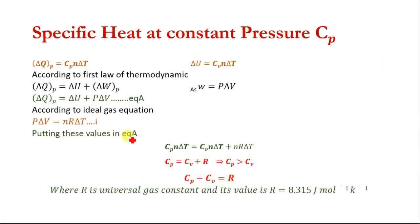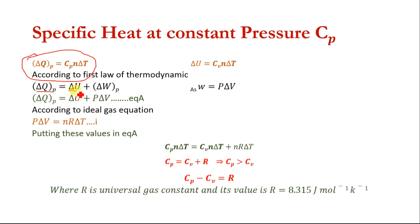Now we deal with specific heat at constant pressure. The equation for specific heat at constant pressure can be written as del Q_P equal to C_P n del T, where del T is the change in temperature. According to the first law of thermodynamics, del Q_P at constant pressure equals del U plus del W. This time there will be a change in volume while we keep the pressure constant.